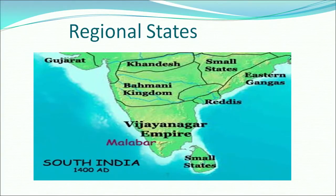What are regional states? If you look at the map, you will find many smaller states that existed in India before as well as after the Delhi Sultanate. The present map is of 1400 AD. You can clearly see the Bahamani and the Vijayanagara Empire, which were the two major kingdoms — the regional states of the time.